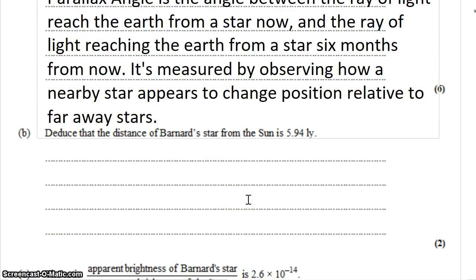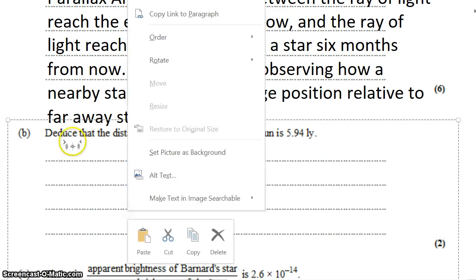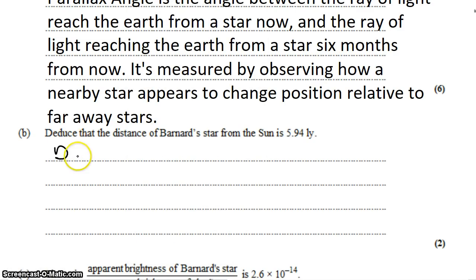We want to deduce that the distance of Barnard's star from the Sun is 5.49 light years. Well, the nice thing about parallax angles is that they work very cleanly into distances. The distance to Barnard's star is just 1 divided by the parallax angle, provided that the parallax angle is measured in arcseconds, and the distance is measured in parsecs. And the angle is measured in arcseconds, so that's 0.549 giving us 1.82 parsecs.